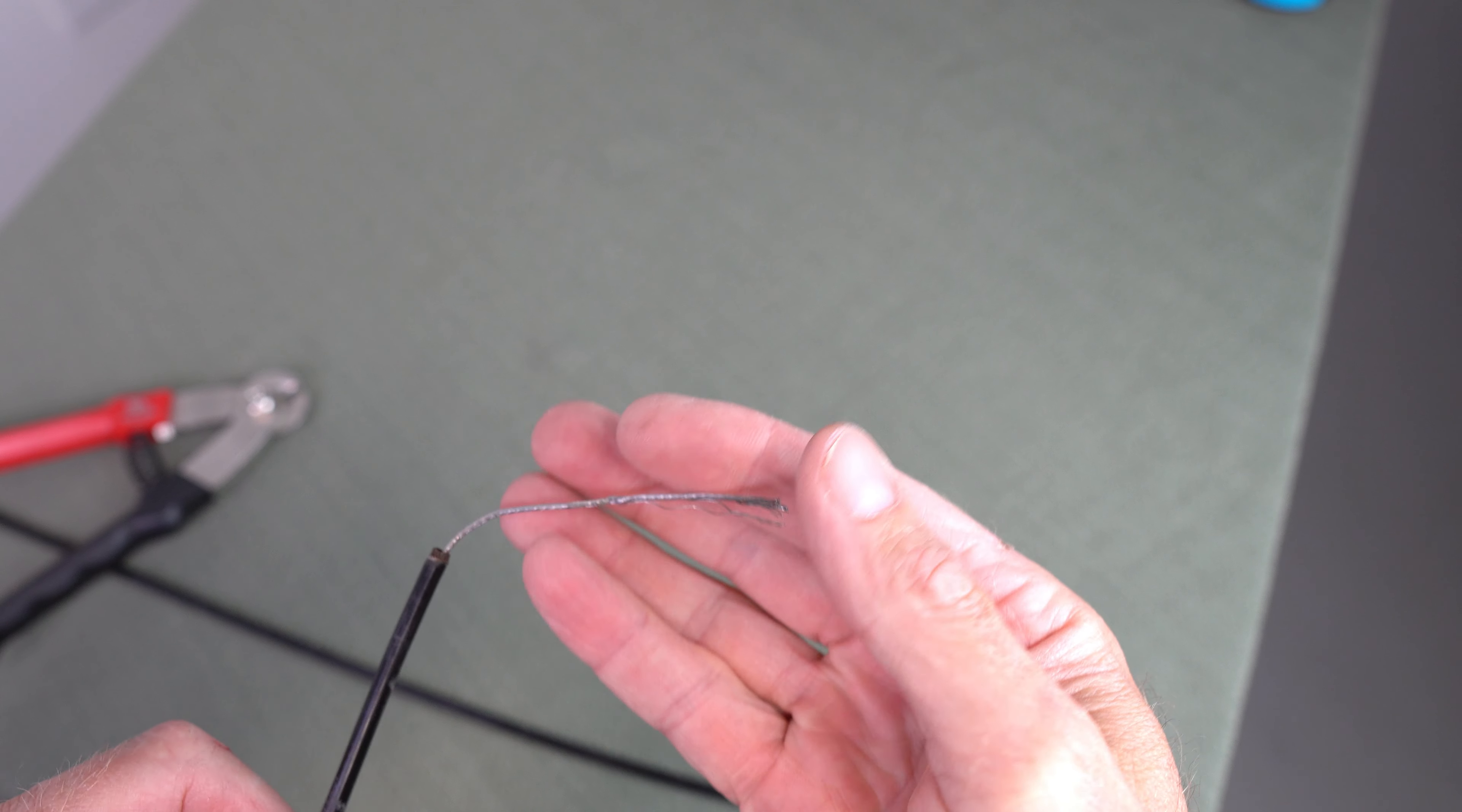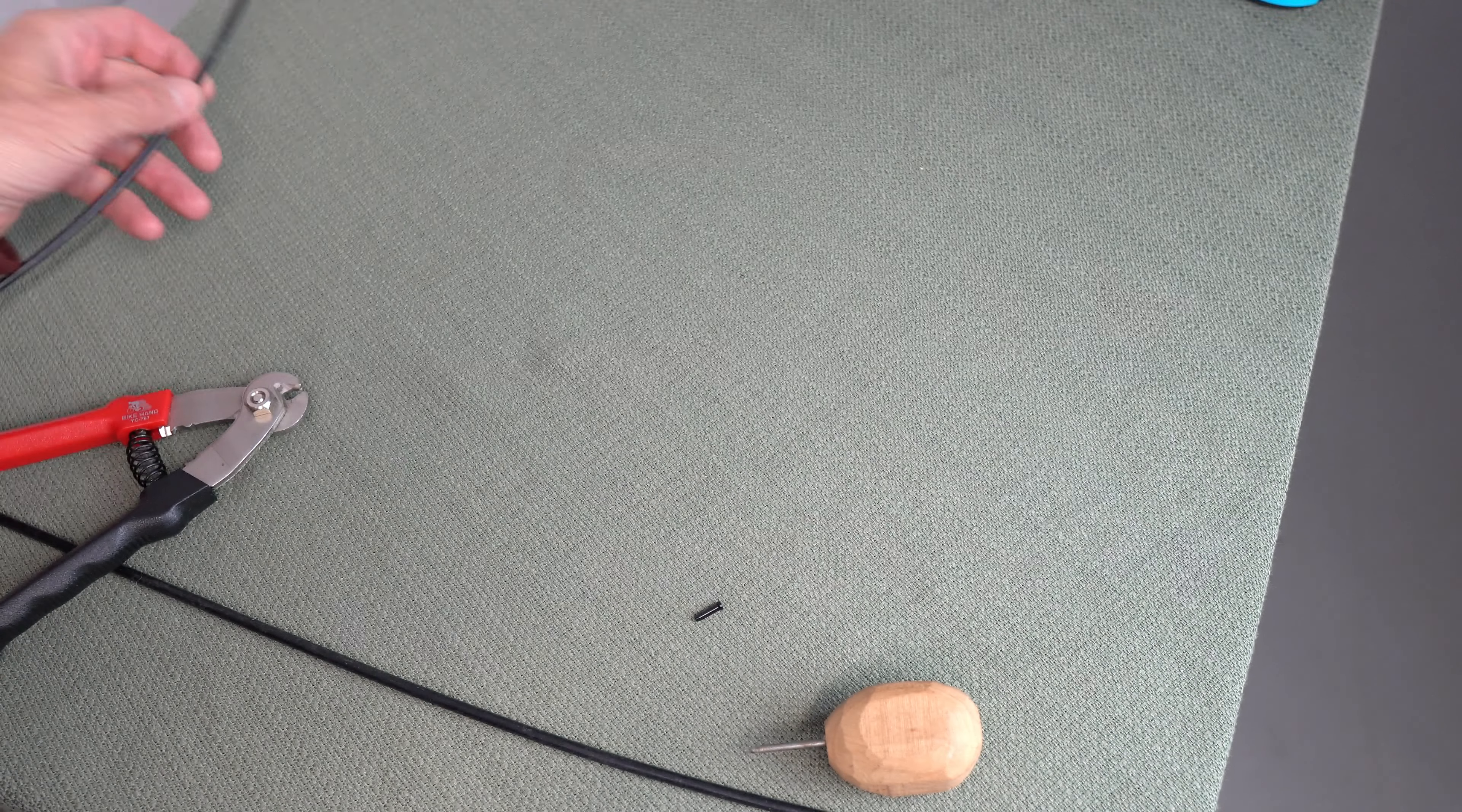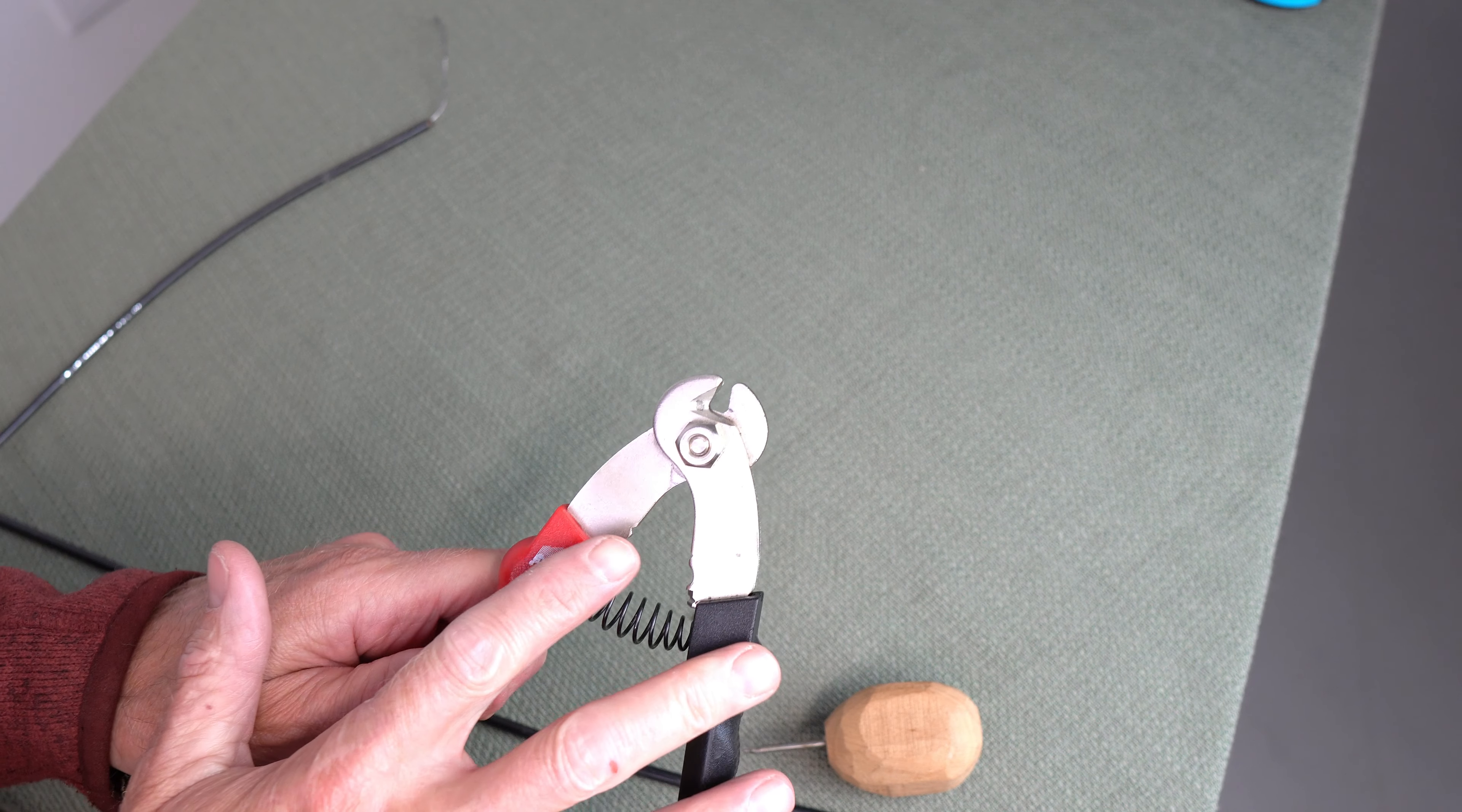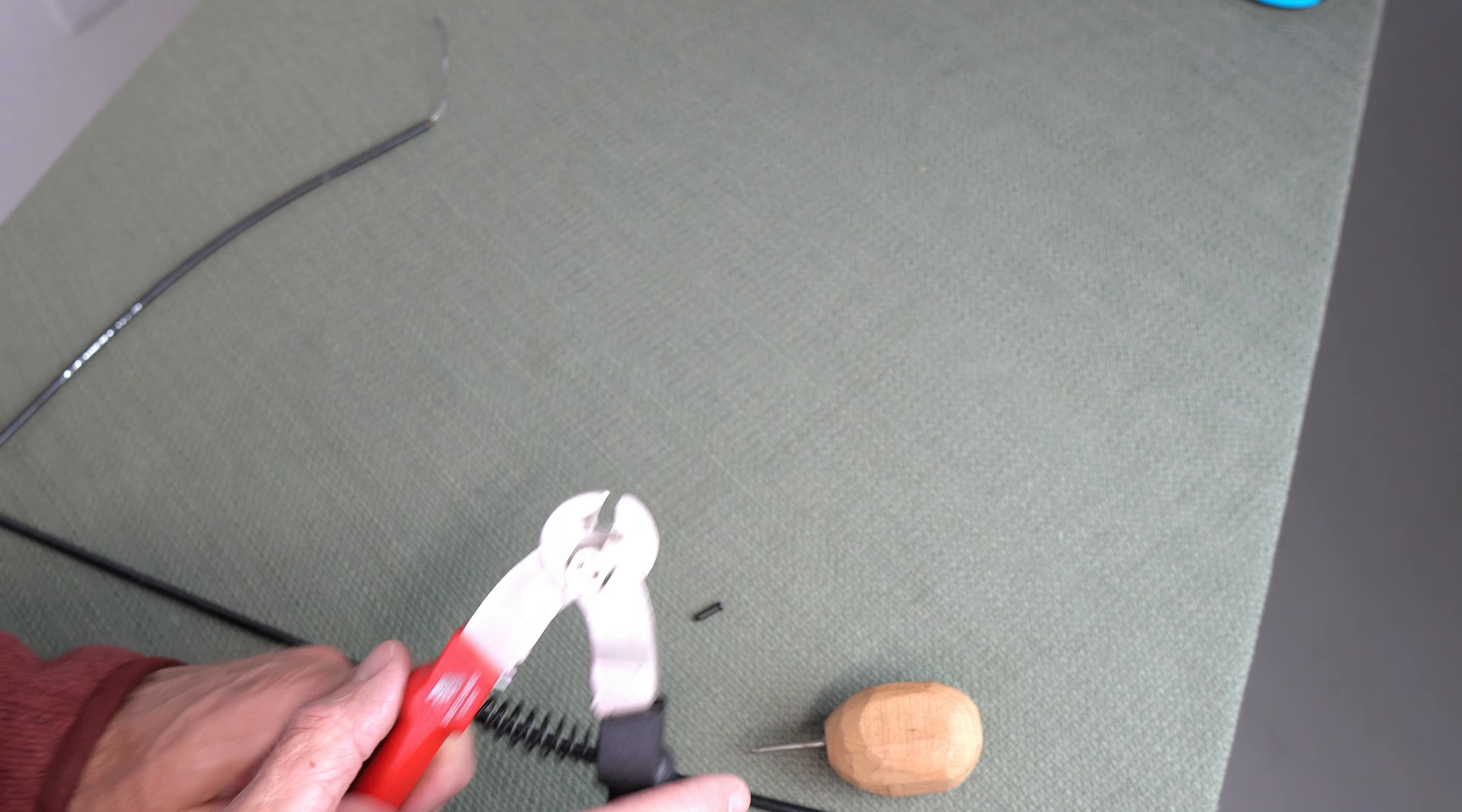So if you've struggled with these kinds of frayed cables on your bike, they are a pain. Let's step through how nicely the Bike Hand Cable Cutters work. These will work on the housing as well as brake cables and shifter cables.